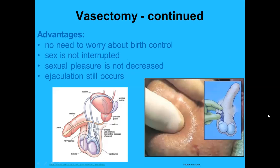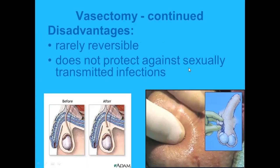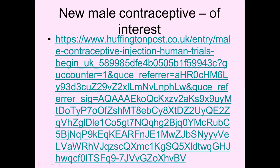Advantages: no need to worry about birth control, sex is not interrupted for putting on a condom, sexual pleasure is not decreased, ejaculation still occurs. Through the skin of the scrotum it is actually possible to see the vas deferens without making a cut. Disadvantages: if there's a change of mind, it's rarely reversible, and it doesn't protect against sexually transmitted infections.